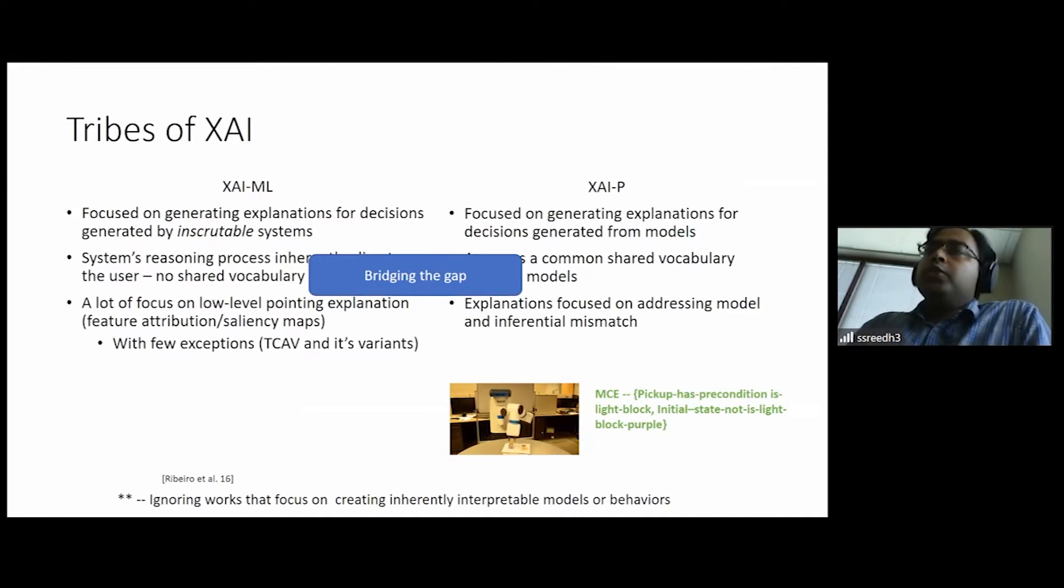So what we want to do, right? We want to, in a sense, try to bridge these two areas of work. And why do we want to do that? Because both come with their own strengths. So XAI-ML deals with incredibly complex systems. They are capable of making very complex decisions and we would want to approach those kinds, be able to provide explainability to many of those systems.